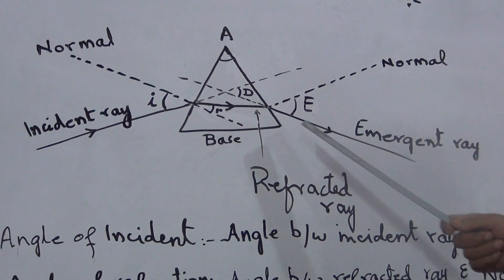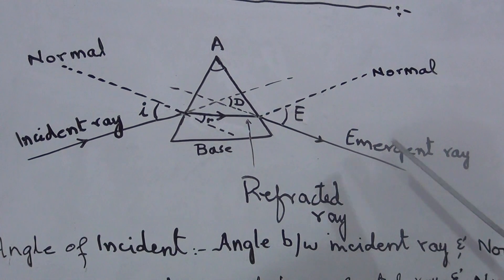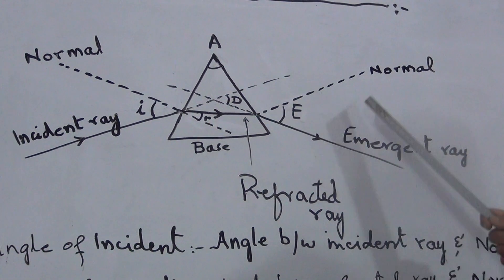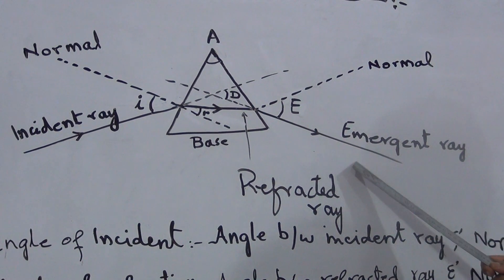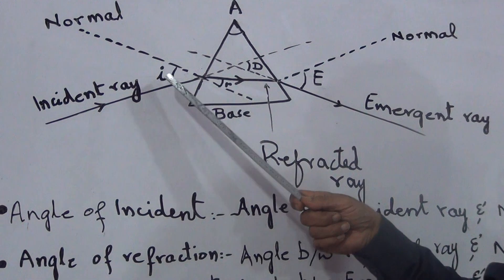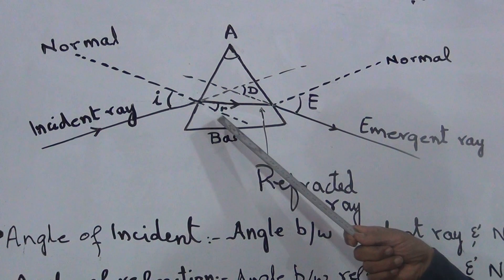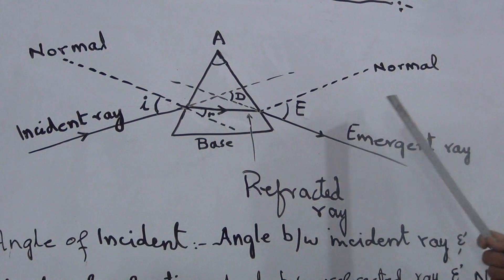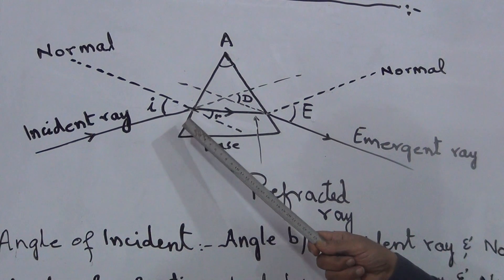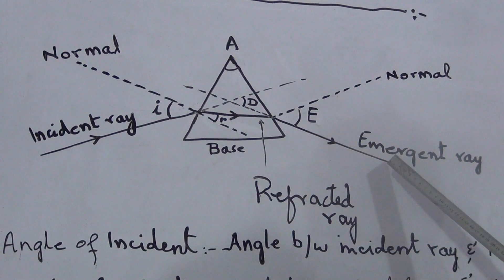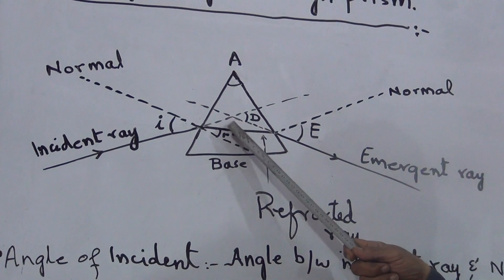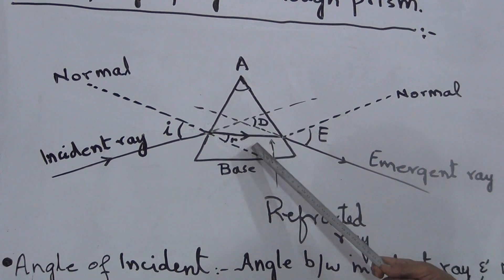When the ray comes out from the prism, if we draw the normal on that surface at 90 degrees, the angle between the normal and the emergent ray is called the angle of emergence. The fourth angle is the angle of deviation. If we extend the incident ray forward and the emergent ray backward, both rays intersect at a point, and that angle is called the angle of deviation.